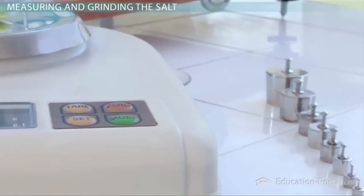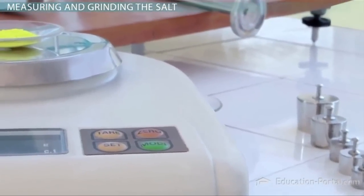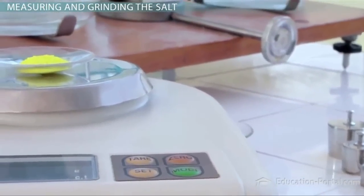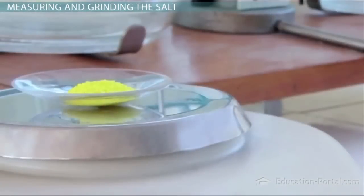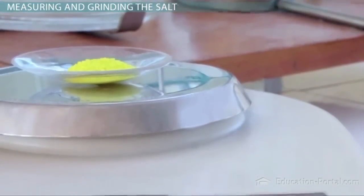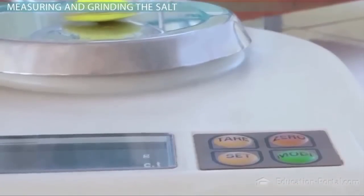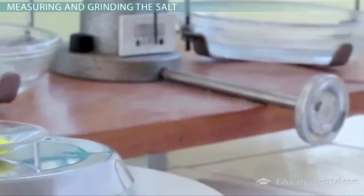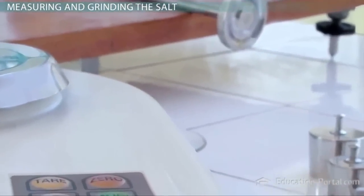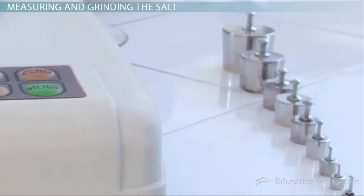Balances come in a large variety, and it is best to be sure you are measuring with one that has the precision necessary for the experiment. For example, if you have a small amount of powder you are measuring, you would probably want to use a balance that measures out to the nearest hundredth or thousandth of a gram. If you are measuring the mass of a large amount of a liquid, you may only need a balance that measures out to the nearest gram.